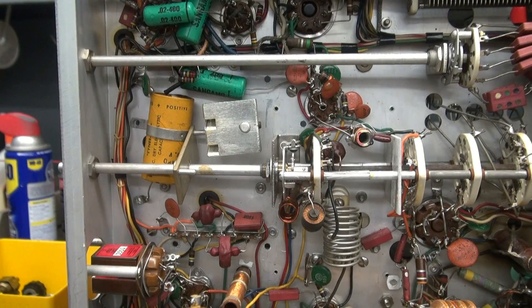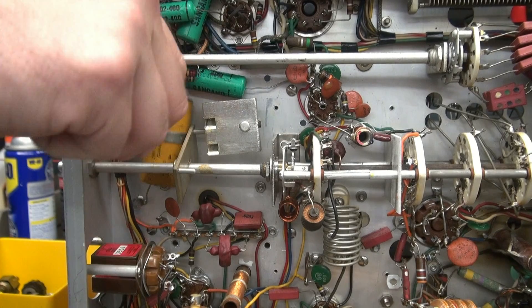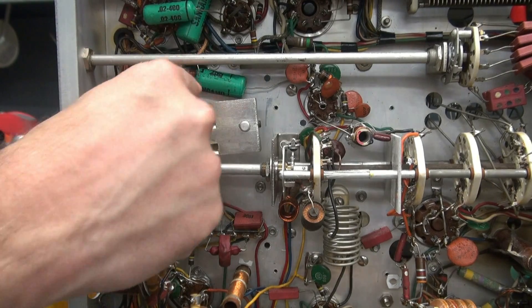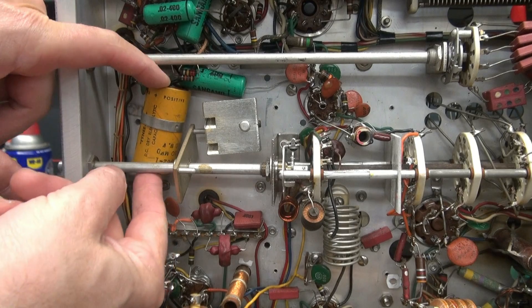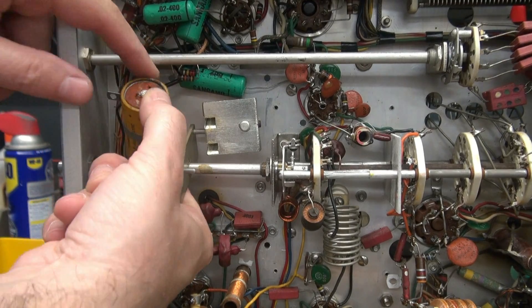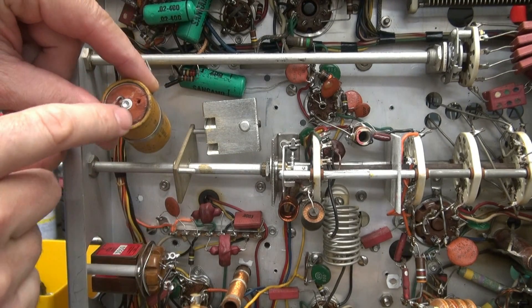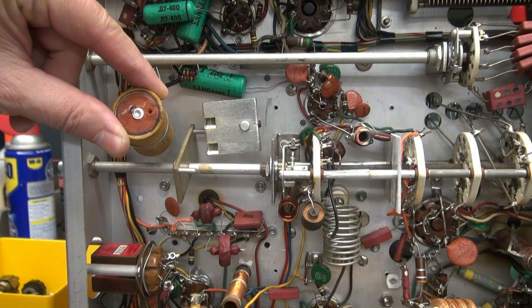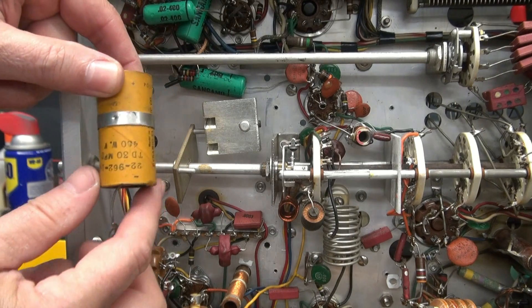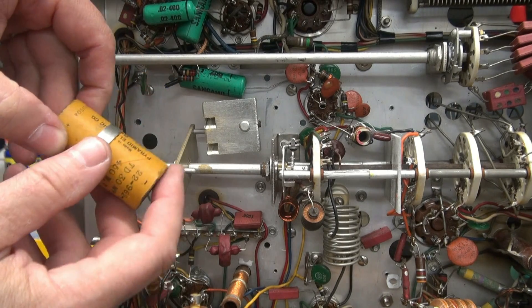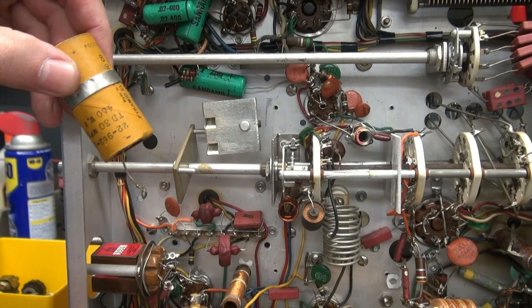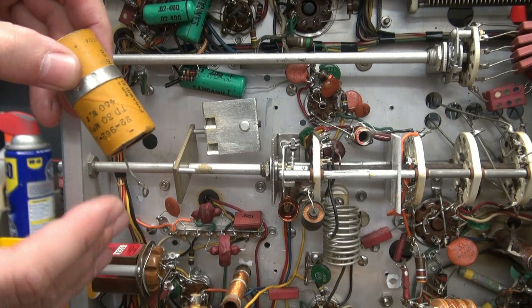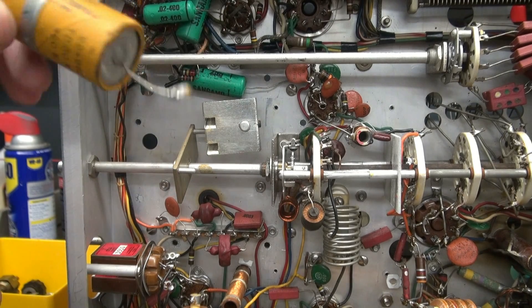So we'll do the one here that's underneath the band switch first. Just clip him right out. You can see how it's jammed in there. And looky there, there's a hole in the top of the cap. So no doubt he's bad. Now when you get in here and do this, there's no reason to check these caps. They're old. You don't want them in here. You just change them.